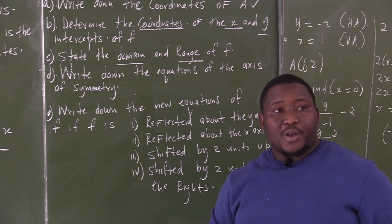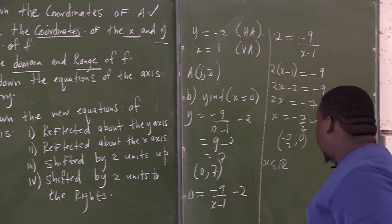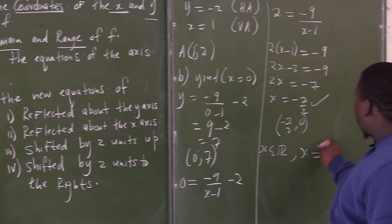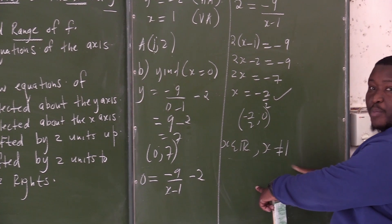How to find the domain of hyperbola? You are going to say x is an element of real numbers, but x is not equal to 1. So this is now my domain.